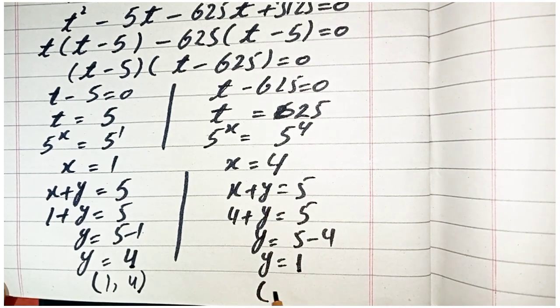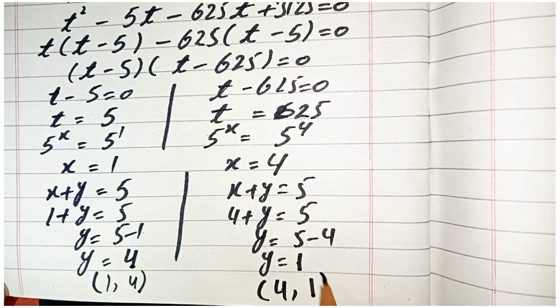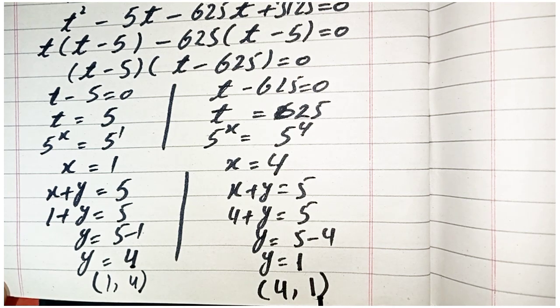So the value of x is 4 and y is 1 (or x is 1 and y is 4). Don't forget to subscribe to our channel. See you in the next video.